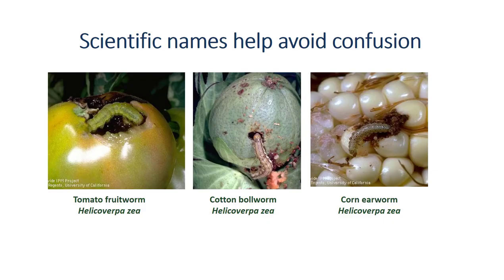The same pests occurring in different parts of the country or in different crops may be called different names by people in the field. A good example is Helicoverpa zea, which is known as the corn earworm when it attacks corn, the tomato fruitworm when it attacks tomatoes, and the cotton bollworm when it attacks cotton. Multiple common names can cause a great deal of confusion when trying to identify a pest or discuss it with an authority. To overcome this, scientists use a unique two-word Latin name for each animal, plant, and microorganism species.